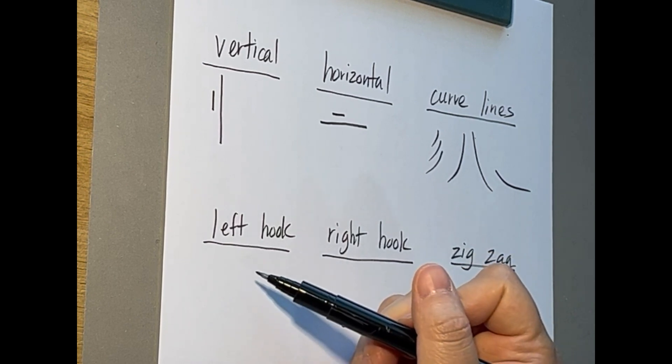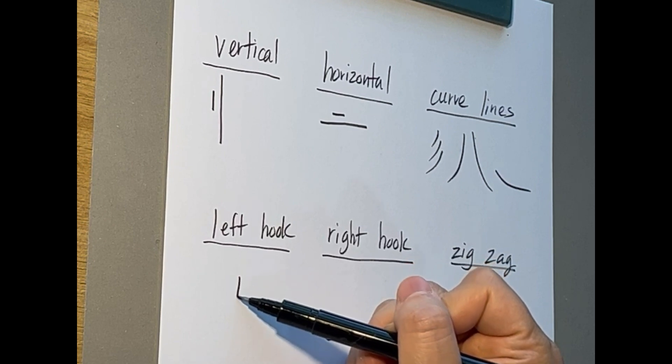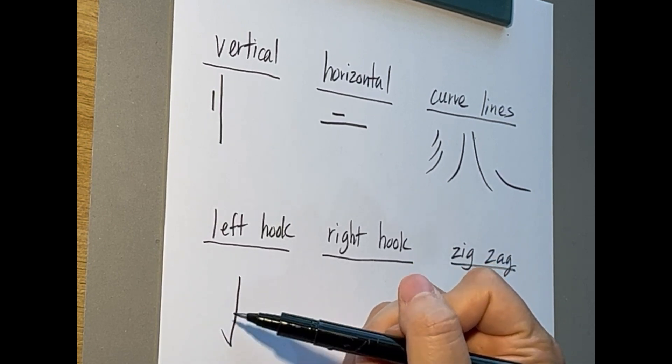The next one will be what I call a left hook. So usually it's made up of a straight line going from top to bottom and then you have a little hook that goes to the left.